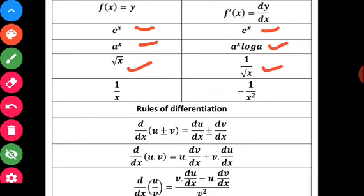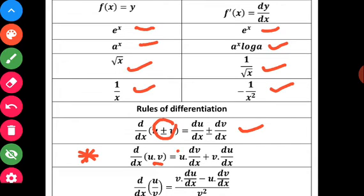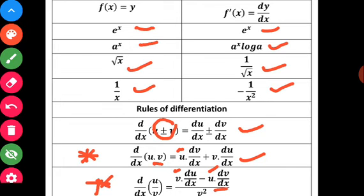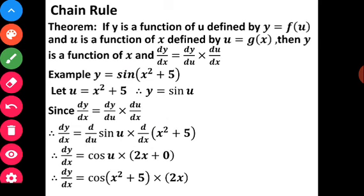Derivative of log x (base e) is 1/x. Derivative of e^x is e^x. Derivative of a^x is a^x·log a. Derivative of √x is 1/(2√x). Derivative of 1/x is minus 1/x². For rules of differentiation: when functions are added or subtracted, apply the derivative to each. Product rule: d(u·v) = u·v' + v·u'. Quotient rule for u/v: [v·u' minus u·v'] / v². Remember these rules — they will be used again and again in 12th standard.